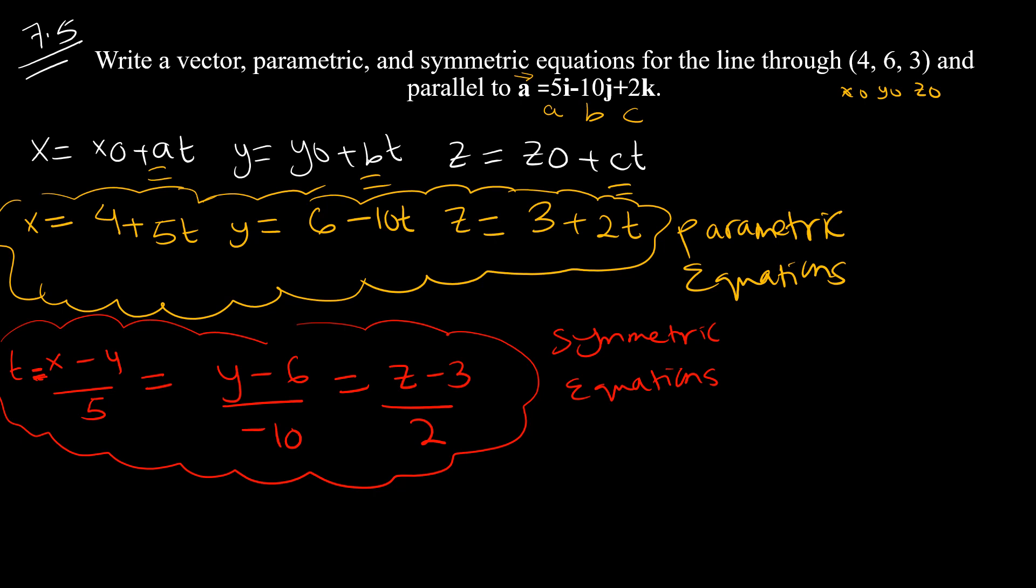I forgot to find the vector equation. The vector equation is easy. Write x, y, z equals... We write the components of vector A, which are 5, negative 10, and 2, with T. Then add the initial point: 4, 6, 3. You write the point given, then the components of A with T. This is the vector equation.